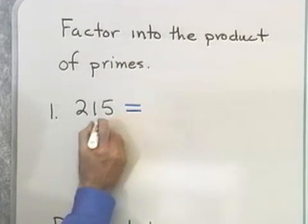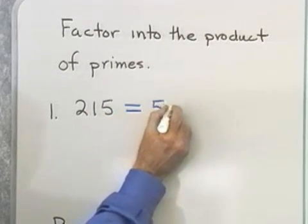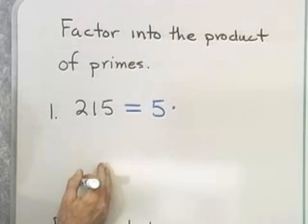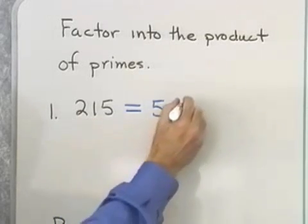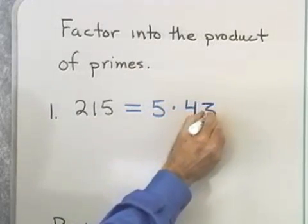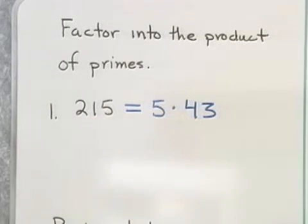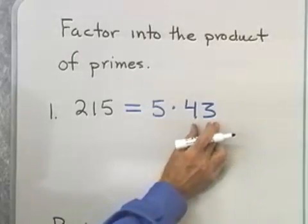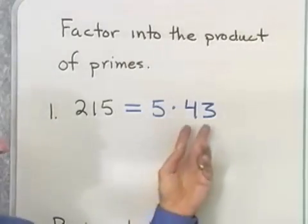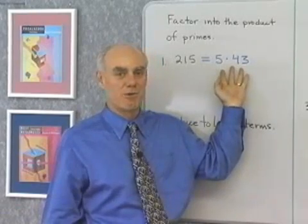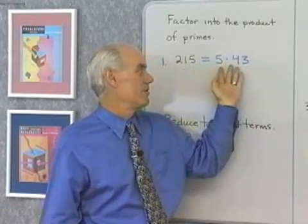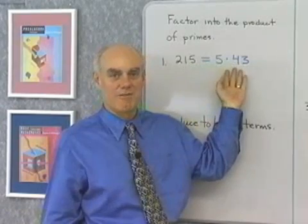So, I look at my number 215, and I see that 5 divides it because it ends in a 5. So, I'll divide it by 5. 5 divides into 215 43 times. So, that's 5 times 43. I look at the number 43. It's a prime number. It has no divisors other than itself and 1, so it's in prime factored form. So, I factored this number 215 into the product of primes.